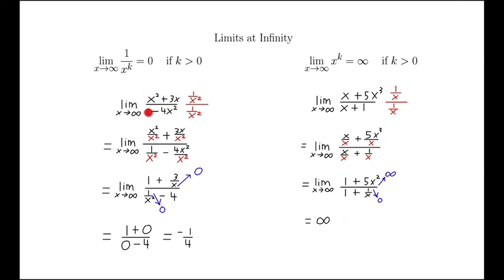So when we deal with expressions that look like some polynomial divided by a polynomial, there's sort of a race going on, which is going to go to infinity faster. In this case, the numerator won the race. The numerator went faster than the denominator, and we ended up with infinity.